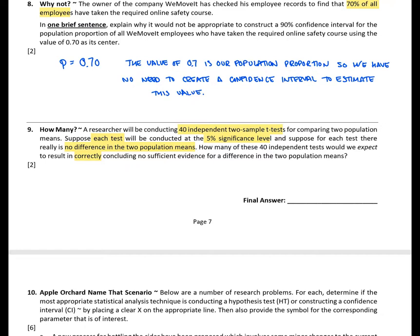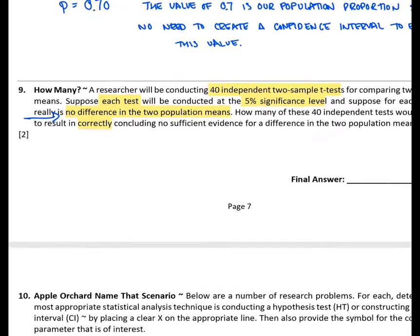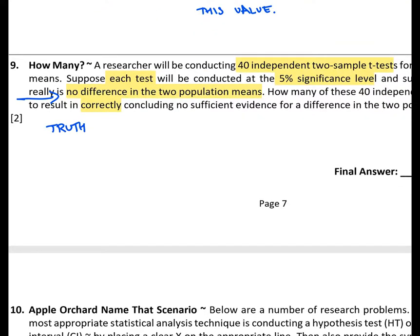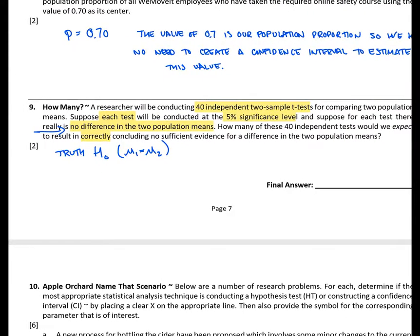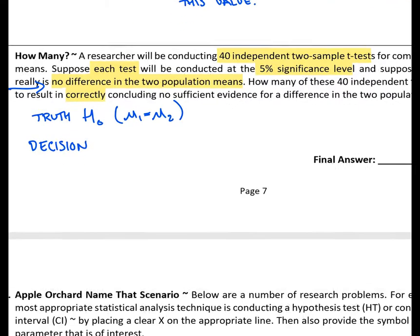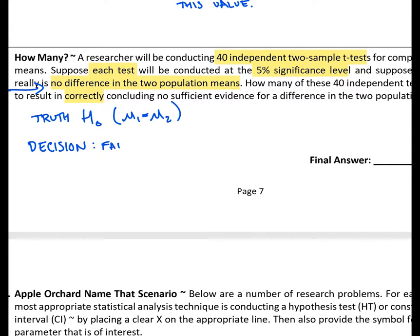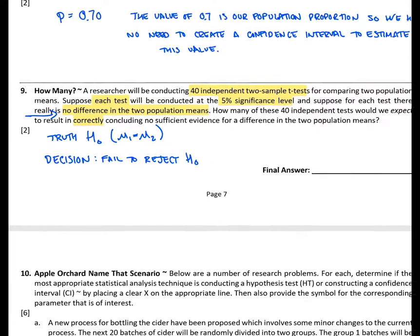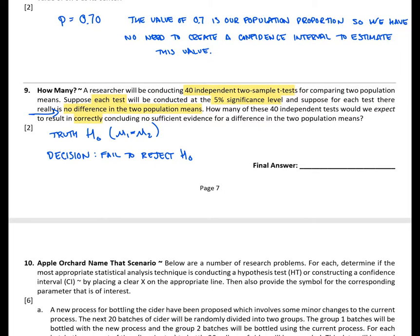So we kind of have to break down this question, see what is the truth, and what is our decision. So we say suppose for each test there really is no difference in the two population means. So here we're saying that the truth is the null hypothesis. We have no difference. Mu 1 is equal to mu 2. We want to know out of these 40 tests how many we would expect to correctly conclude there is no evidence. So our decision would be to fail to reject H0.